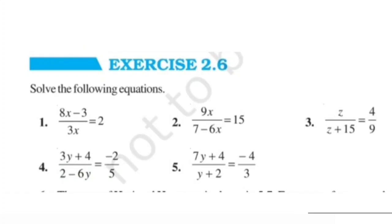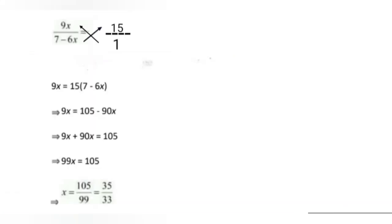Question number 2: solve 9x upon (7 minus 6x) is equal to 15. By cross multiplication - writing 15 as 15 upon 1 - we get 9x into 1 equals 15 into (7 minus 6x). So 9x equals 105 minus 90x. Writing variables separately: 9x plus 90x equals 105, so 99x equals 105. Therefore x equals 105 upon 99, which we cut by 3 to get 35 upon 33.